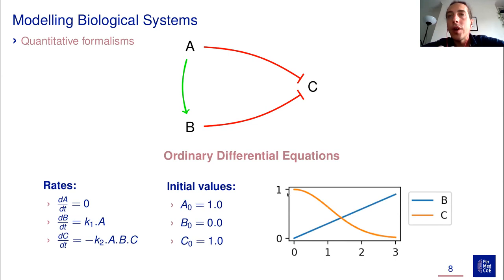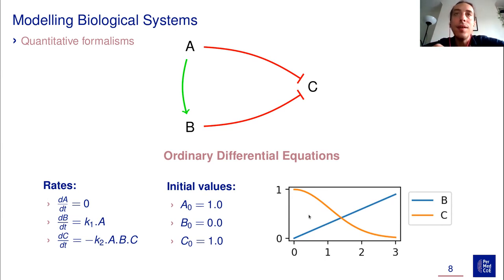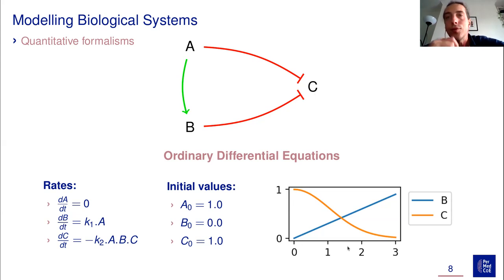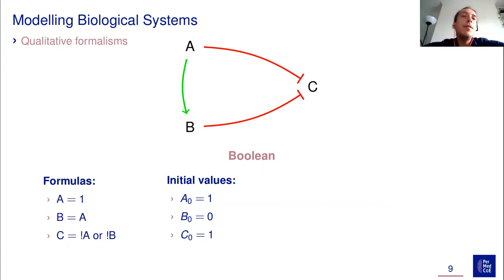When we simulate this ODE system, plotting only B and C since A stays constant at one, B starts to get progressively activated, and as B gets activated both nodes exert a negative influence on C, so C slowly gets inactivated. Here you have a real notion of time — you can read the state at time 1.5 for example — and values are continuous.